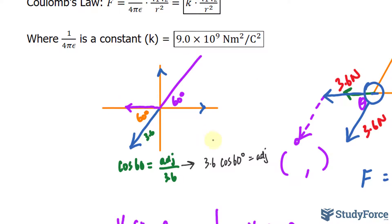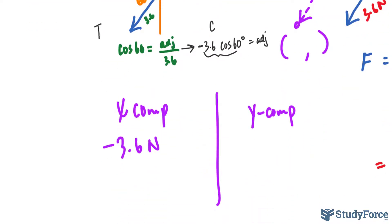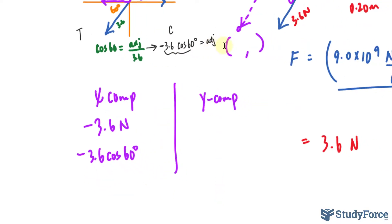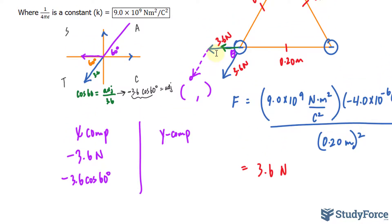Now remember, the CAST rule says that cosine is positive here. All trig functions are positive here. Only sine is positive here and only tangent is positive there. Because only tangent is positive there and we're using cosine within this quadrant, then whatever you get when you calculate that will be negative. So what we will do is write down the second x component being negative 3.6 cosine 60 degrees. And I place that negative there because we are using cosine and we do have to respect the CAST rule.